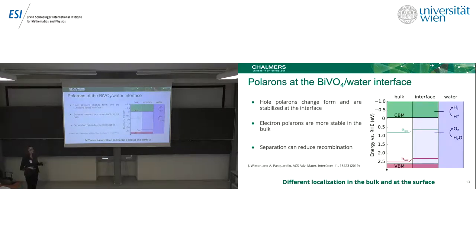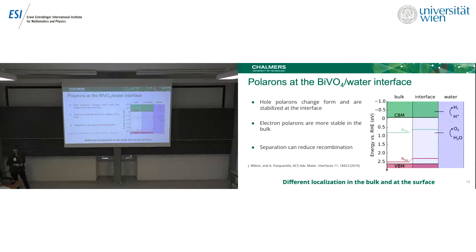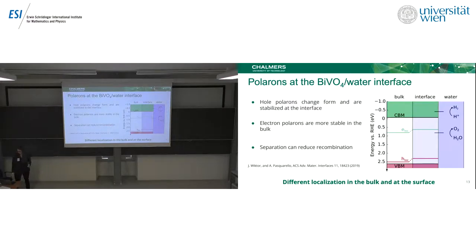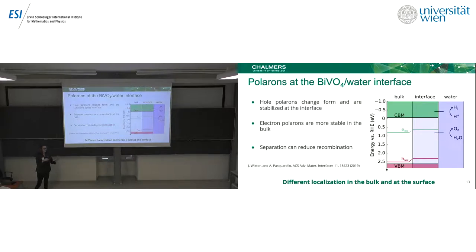Here is the energy alignment. In the end, the levels for single polarons are not very much affected by having the interface, but we see that they both shift up by about 0.2 eV. One important thing is that at the surface we can have different types of polarons than in the bulk, with different stability. Another interesting point is that the electron polaron could prefer to stay in the bulk. So while I mentioned additional recombination channels between hole and electron polarons, looking at the surface, they may be separated in space — so this is not such a big problem.